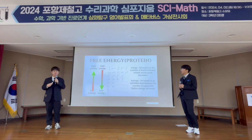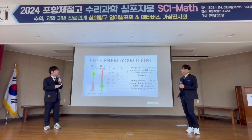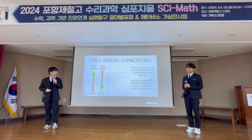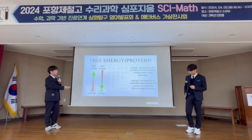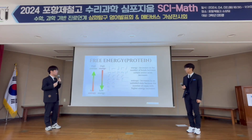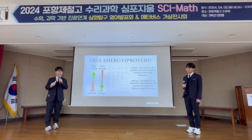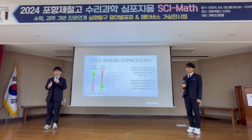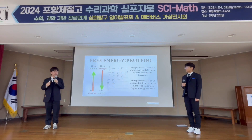The same principle applies to proteins. Protein bonding occurs to decrease the energy of the protein itself. As you can see in this figure, energy decreases as the number of bonds between certain amino acids increases. Meanwhile, entropy increases in an unfolding stage because the number of cases with higher energy increases. Therefore, protein folding can be explained accurately only by comparing the magnitude of the free energy according to the protein state change.